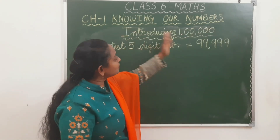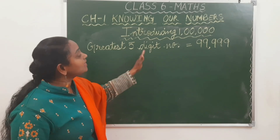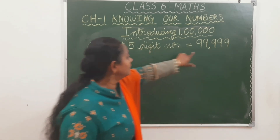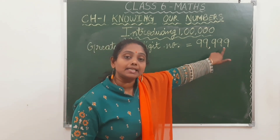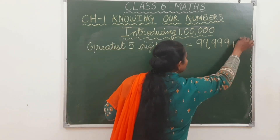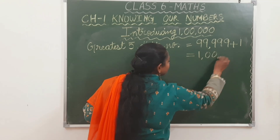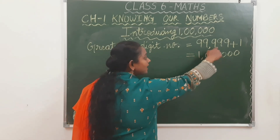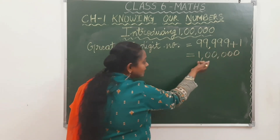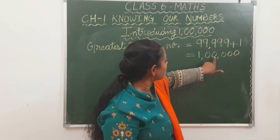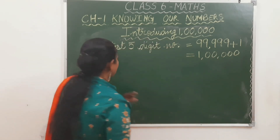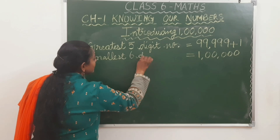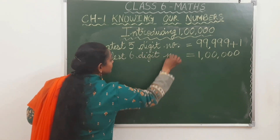The next subtopic is introducing 1,00,000. We are going to see the greatest 5-digit number. The greatest 5-digit number is 99,999. If you add 1 to this, you will get 1,00,000. 99,999 plus 1 equals 1,00,000. It has 6 digits, so it is the smallest 6-digit number. We can write 1,00,000 as 10 multiplied by 10,000.